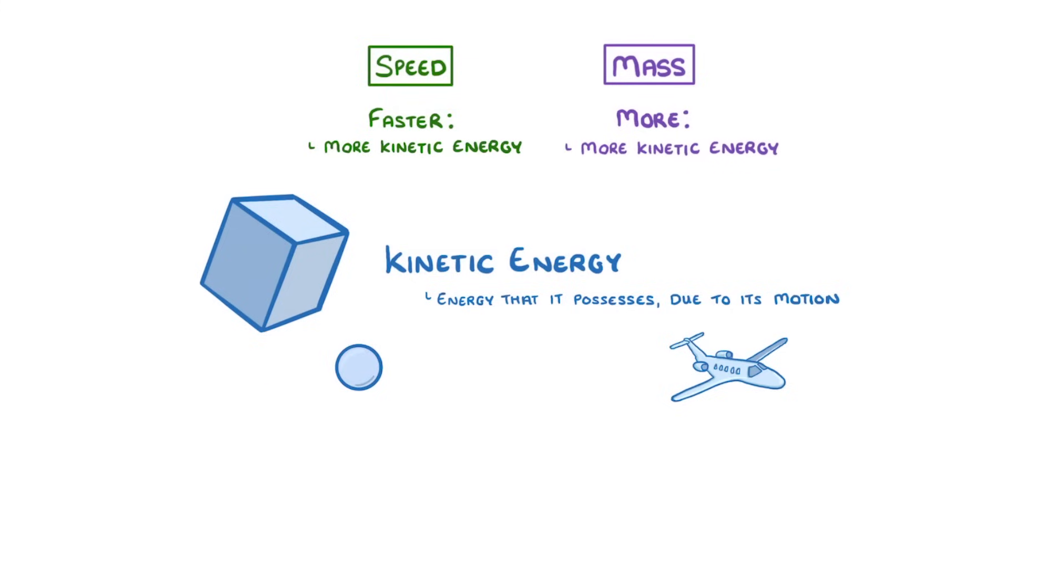So if our particle weighed 0.1 grams, but our plane weighed 20 tons, and both of them were travelling at 900 meters per second, the plane would have much more kinetic energy, because it has a much larger mass, but the speeds are the same.